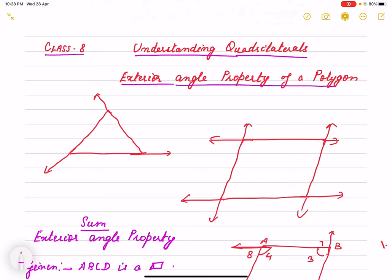What is the sum of exterior angle of a polygon? Last video I have shown what is the interior. If any angle is made inside the polygon, it is called interior.